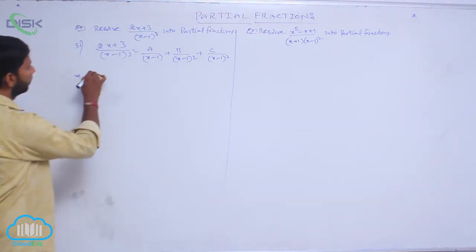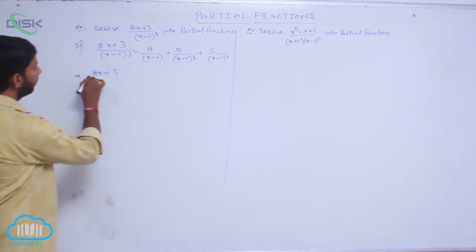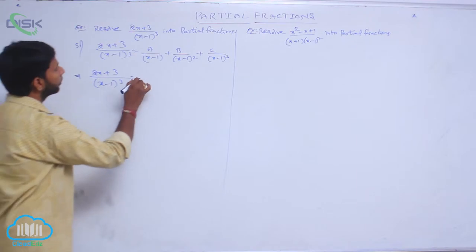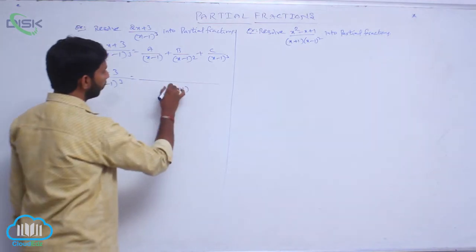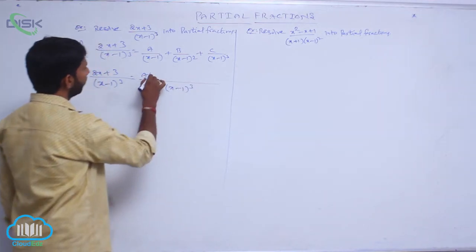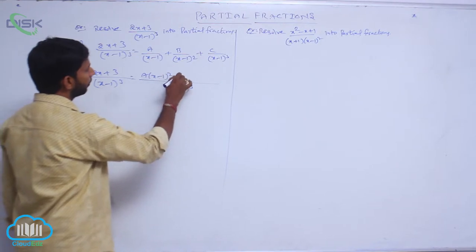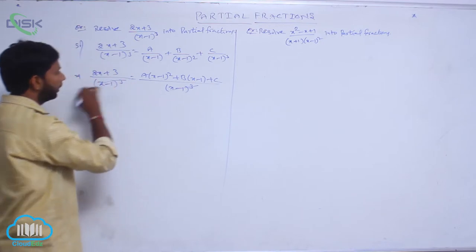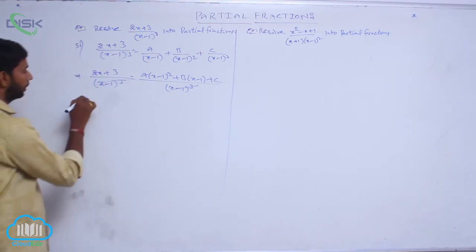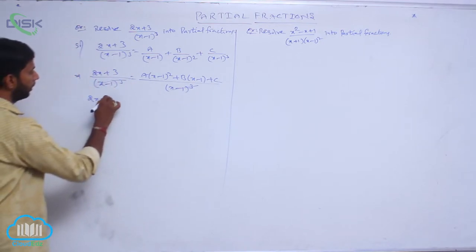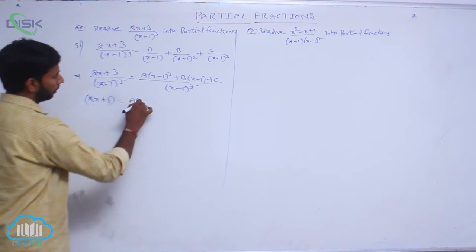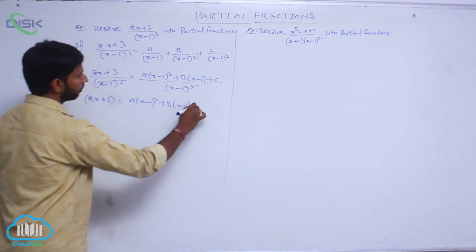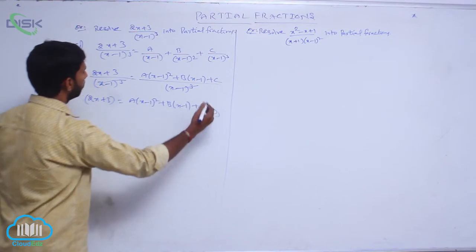Taking LCM on both sides, (2x + 3) / (x - 1)³ equals [A(x - 1)² + B(x - 1) + C] / (x - 1)³. Cancelling (x - 1)³ from both sides gives: 2x + 3 = A(x - 1)² + B(x - 1) + C. This is condition number 2.